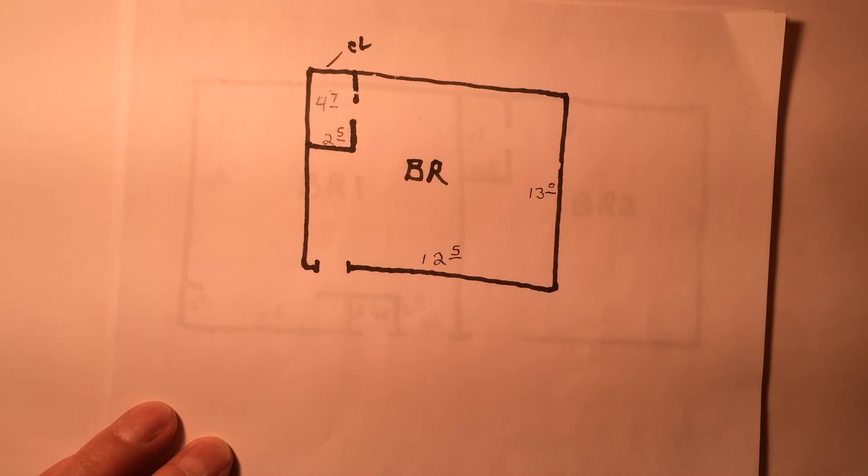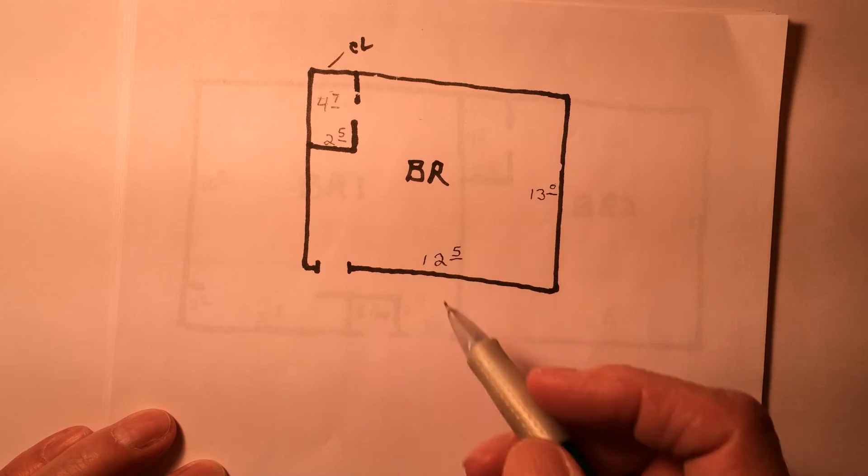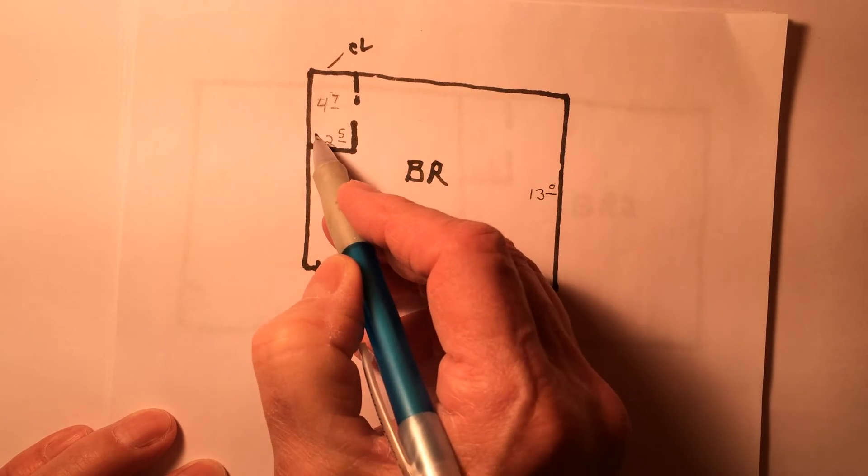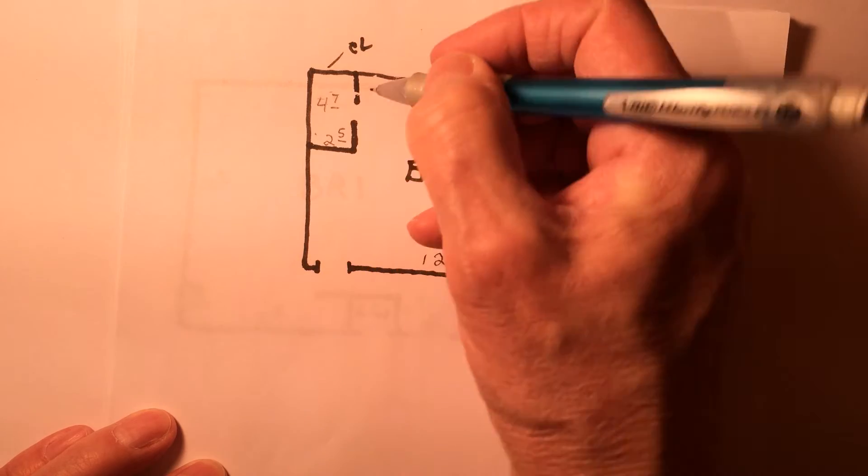Here's the same room with a closet. This closet is two feet five inches deep, wall to wall. Not through the door or anything like that.